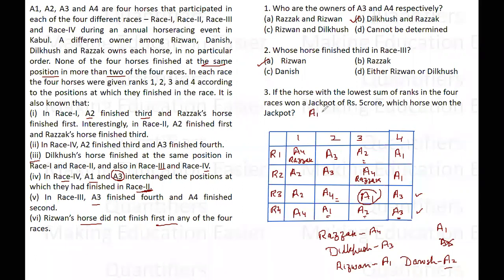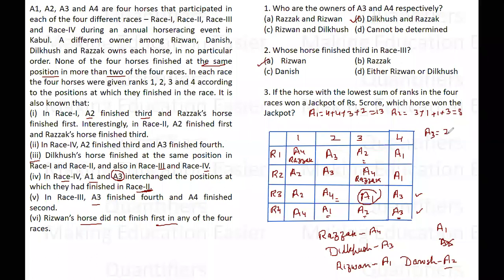The third question says: if the horse with the lowest sum of ranks in the four races won a jackpot, which horse won it? For a1: 4+4+3+2 = 13. For a2: 3+1+1+3 = 8. For a3: 2+2+4+4 = 12. For a4: 1+3+2+1 = 7. The lowest total is 7, so horse a4 wins the jackpot.